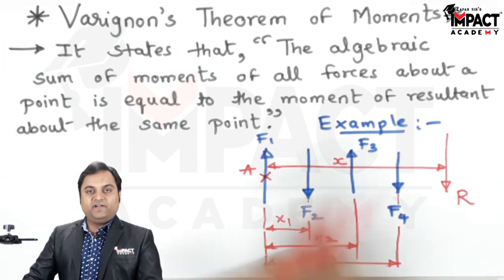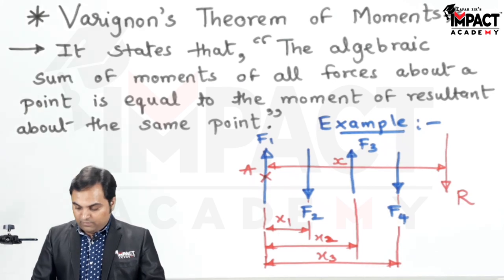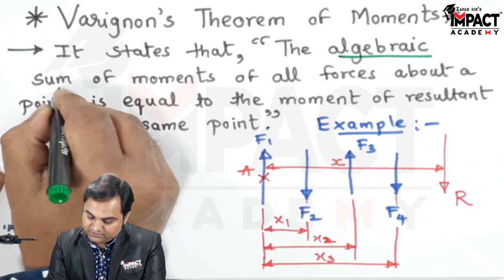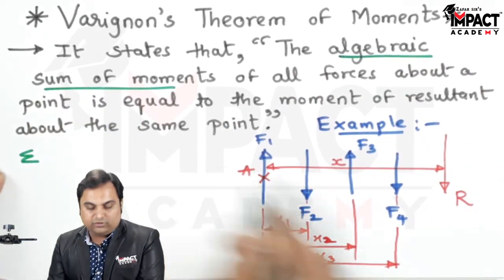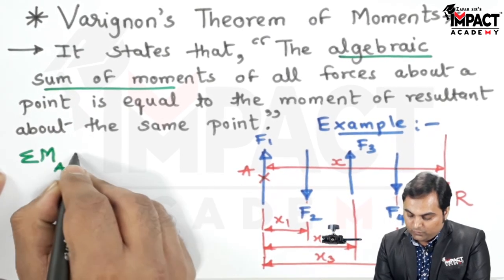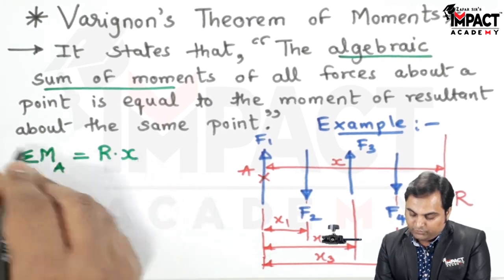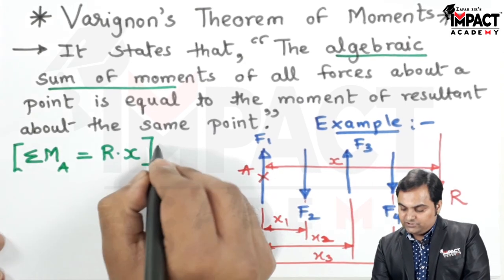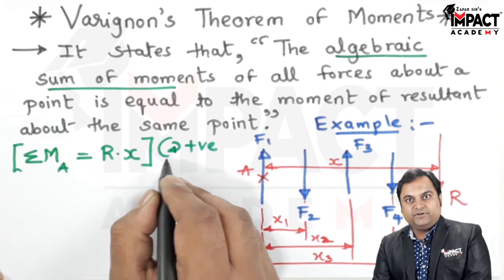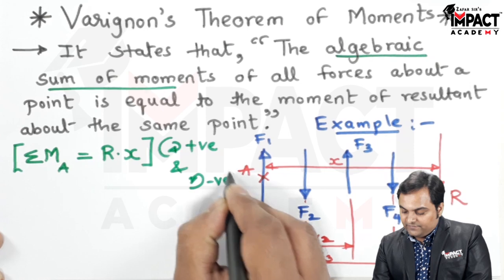As per Varignon's theorem of moments, which is used to calculate the location of resultant for the non-concurrent forces, it says that the algebraic sum, that is summation of moments of all forces about a common point A, will be equal to the moment of resultant about the same point, that is R into X. And here the convention is, whatever the clockwise forces are there, clockwise moments are treated as positive, and anti-clockwise moments are taken as negative.